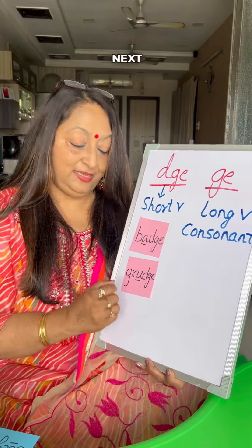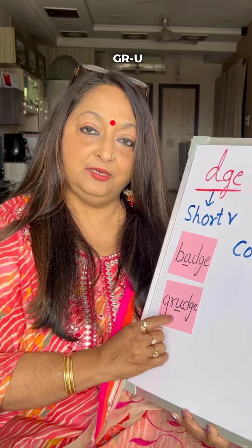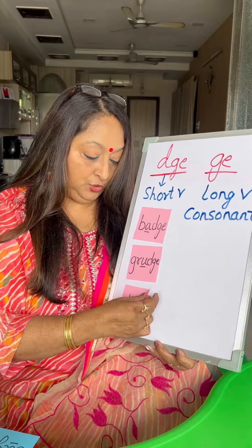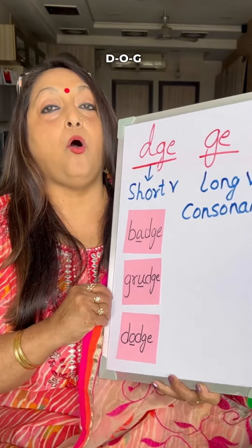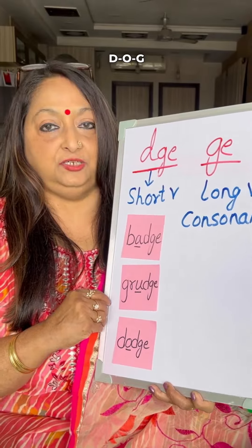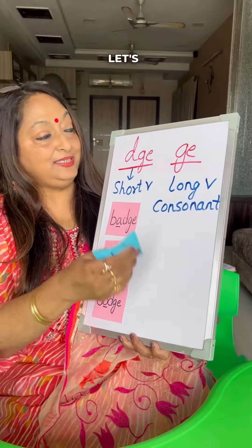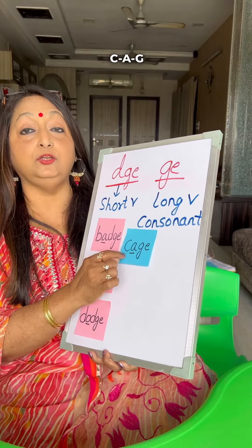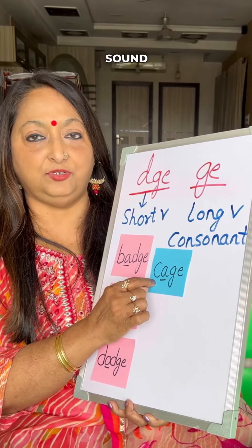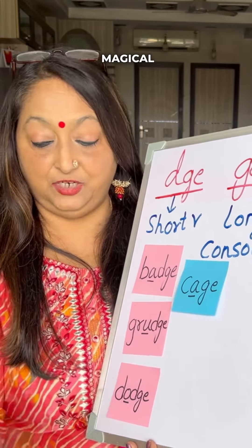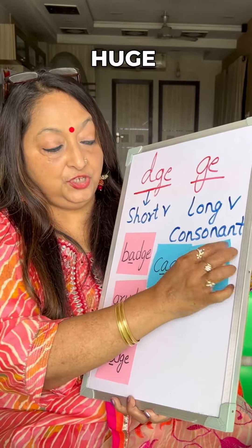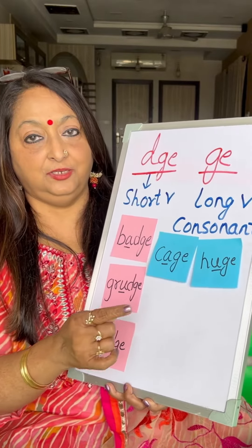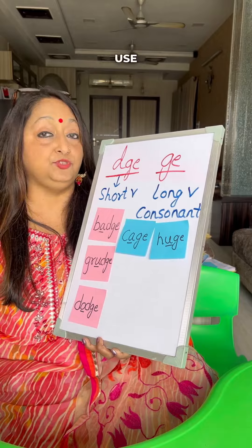Next is 'grudge' — short vowel sound. 'Dodge' — short vowel sound. Now let's see when we use GE. When there is a long vowel sound, because of the magic E — 'huge.' When it's a long vowel sound, we use GE, not DGE.